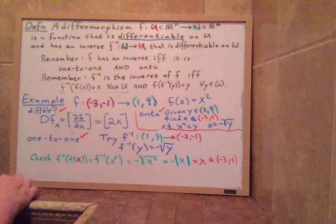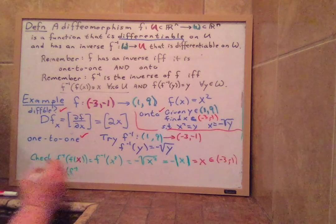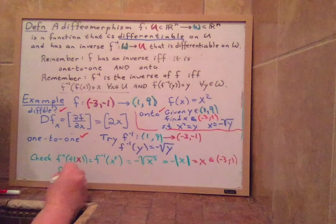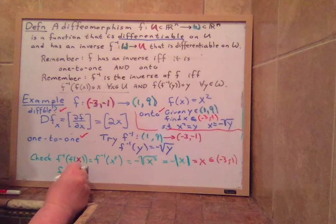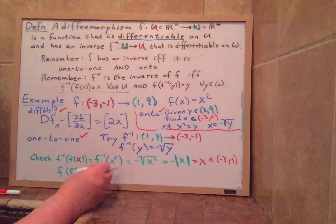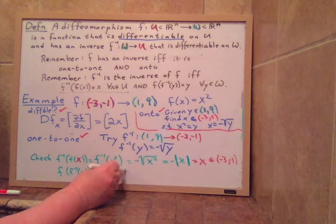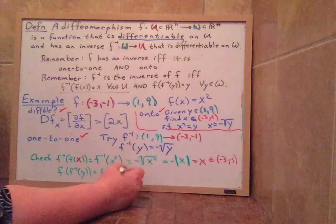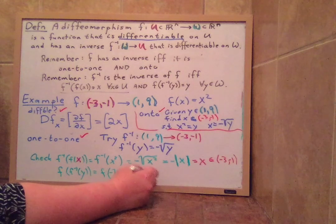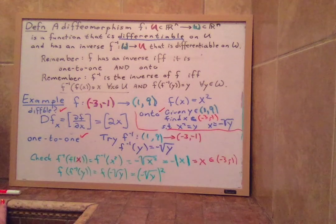Next, we have to check F of F inverse of any input y. Now the inputs y we've been drawing in green. So y. This would be F of, what is F inverse of y? We're trying negative square root of y. And what does F do? F squares. So this is negative square root of y squared.